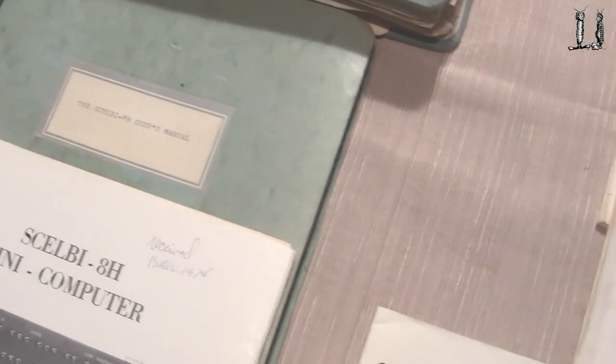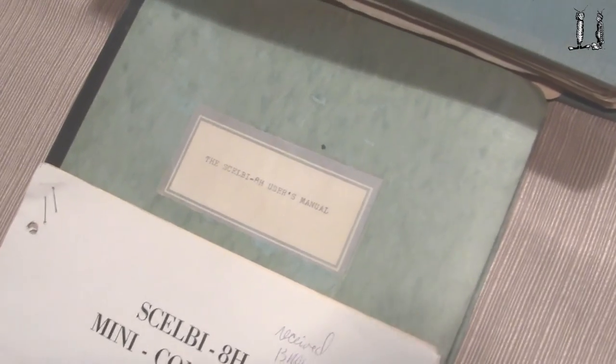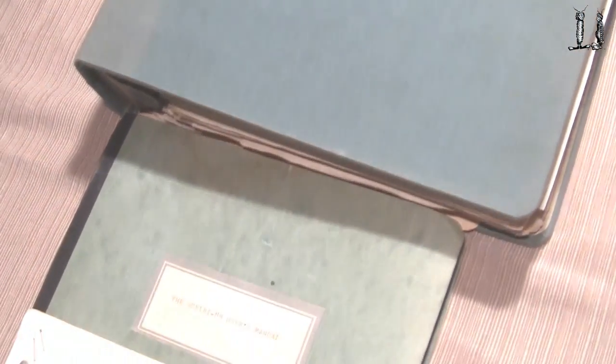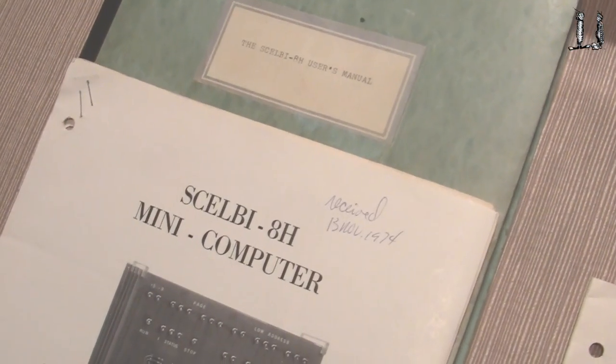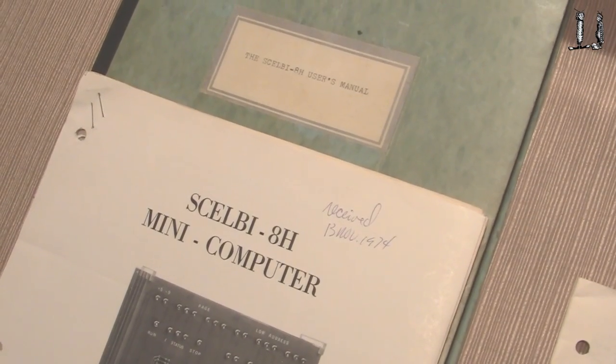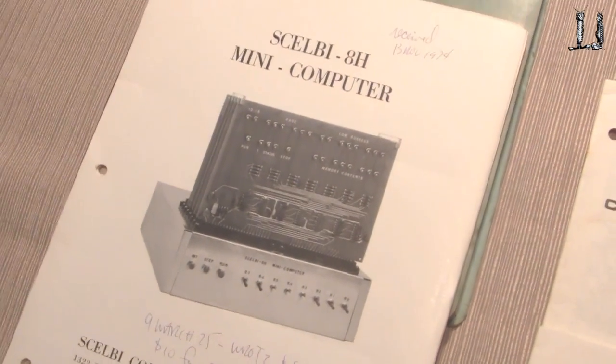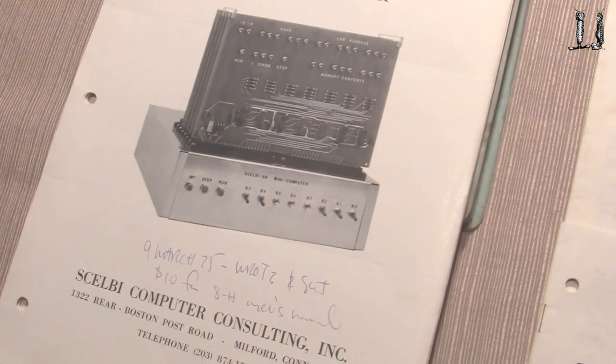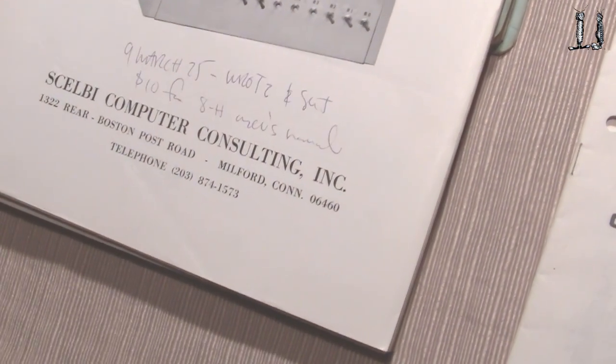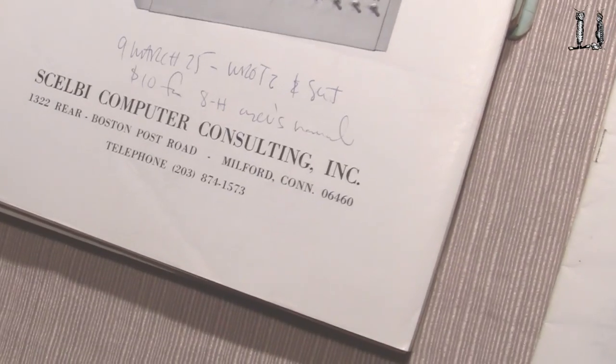In addition to this information, a very large three ring binder with enormous amount of information in it. Another manual for the 8H. And here's the early assembly manual for the 8H computer. This has got a date on it of March 9, 1979.